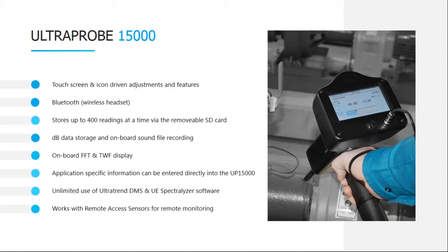One of the features we'll talk about heavily is the Input Data icon. For each of the various applications, we can input application-specific information right onboard the Ultra Probe. We also have unlimited use of the Ultra Trend DMS and UE Spectralizer software — we've never charged license fees or for updates or upgrades. You can go to UESystems.com, click on Products, then Software and Manuals, and download the software right from our website.